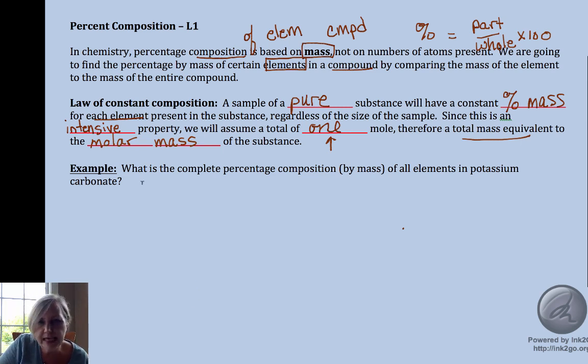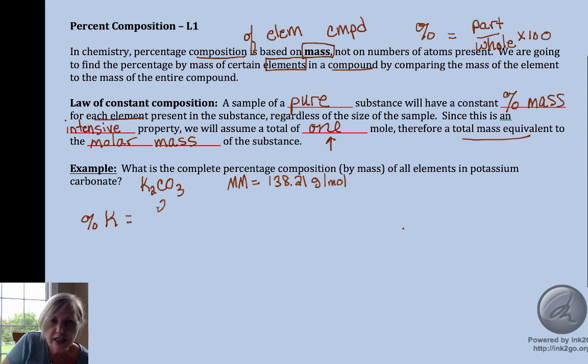So let's take a look at potassium carbonate. If we want to know the percent of that that is potassium, when we calculate that molar mass, and that molar mass is equal to 138.21 grams per mole. When we did that calculation, we took two times potassium's molar mass.